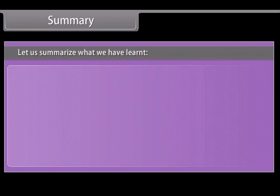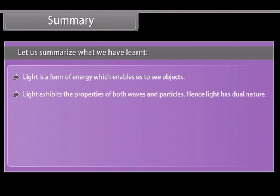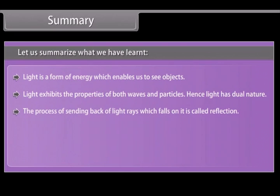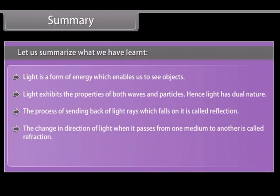Summary. Let us summarize what you have learned. Light is a form of energy which enables us to see objects. Light exhibits the properties of both waves and particles. Hence, light has dual nature. The process of sending back of light rays which falls on it is called reflection. The change in direction of light when it passes from one medium to another is called refraction.